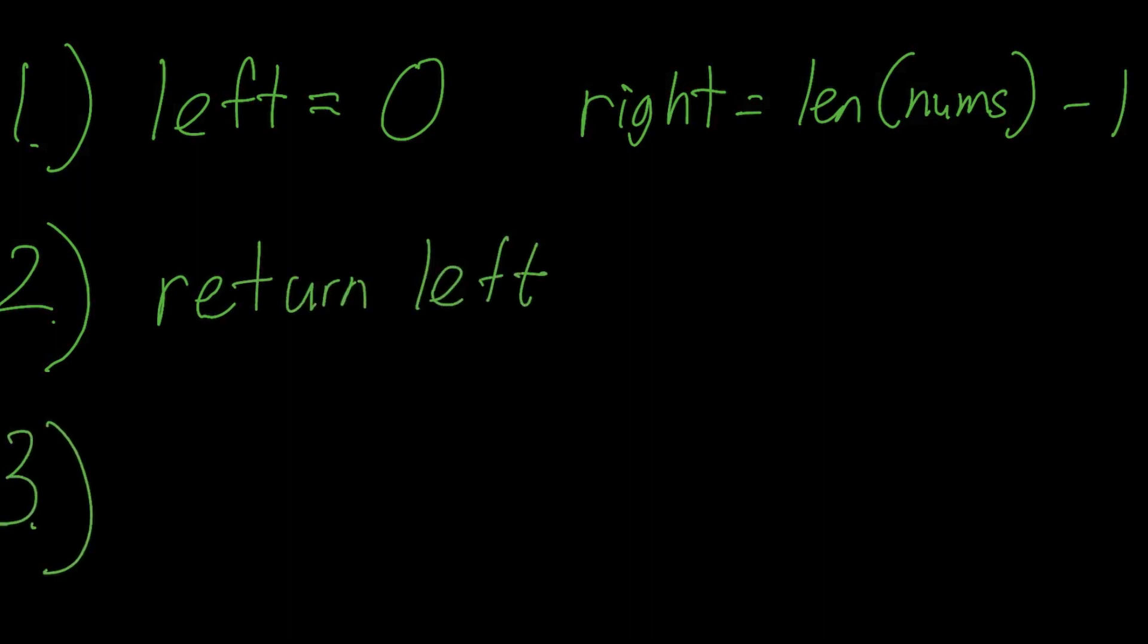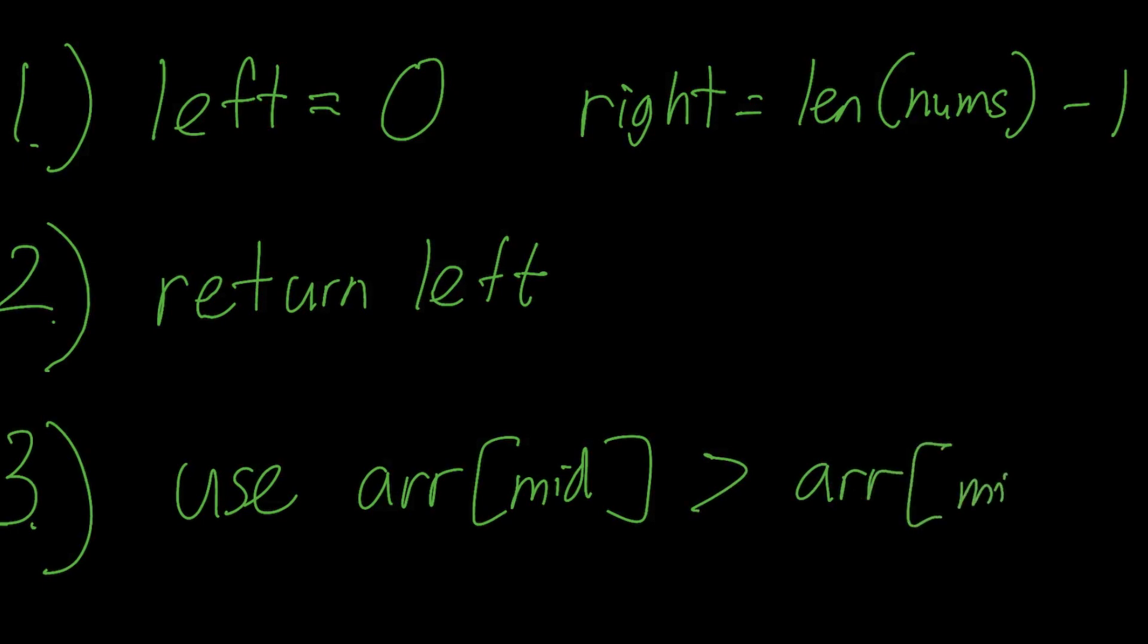So we just want to return a value that's a peak. Hence, we can just return left. Number three, what is this function that gives us a binary decision? In this case, we just want to know if the midpoint is a peak. Hence, we can just check it by using array mid is greater than array mid plus one.